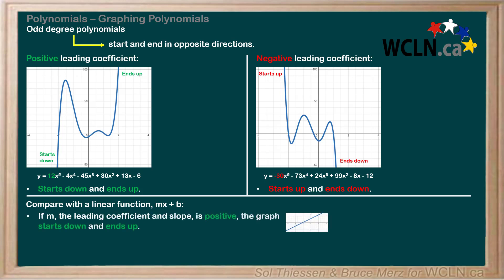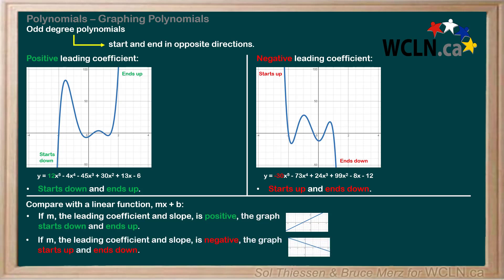Since we're already familiar with how the leading coefficient of a linear function affects its graph: if m, the leading coefficient and slope, is positive, the graph starts down and ends up. If m is negative, the graph starts up and ends down. This describes the end behavior of all odd degree polynomials.